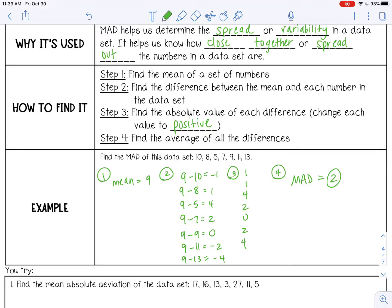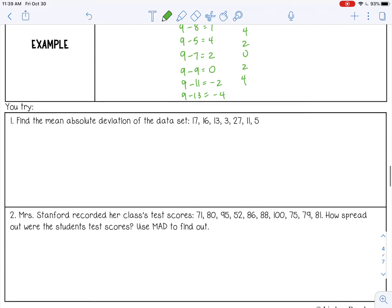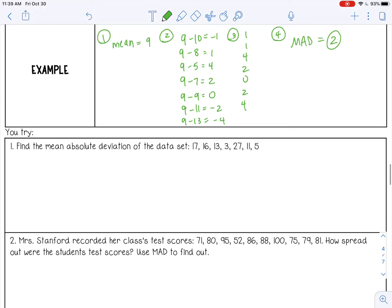So the mean absolute deviation is 2, which means these numbers are pretty close together. They don't have a huge range. Go ahead and pause the video now and find the mean absolute deviation for 1 and 2 below.